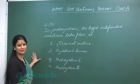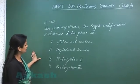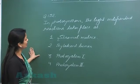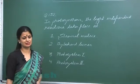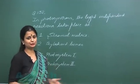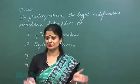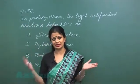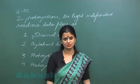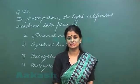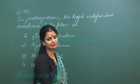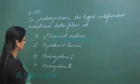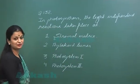Looking into question number 132: in photosynthesis, the light independent reactions take place at. So you know that photosynthesis is divided into two phases, that is the light phase and dark phase. Here we have to see the location of light independent, that is the dark phase.